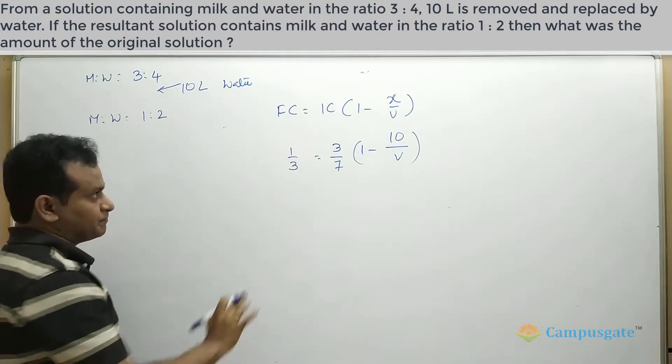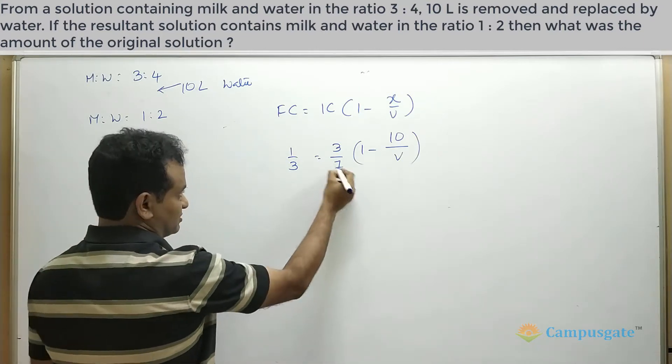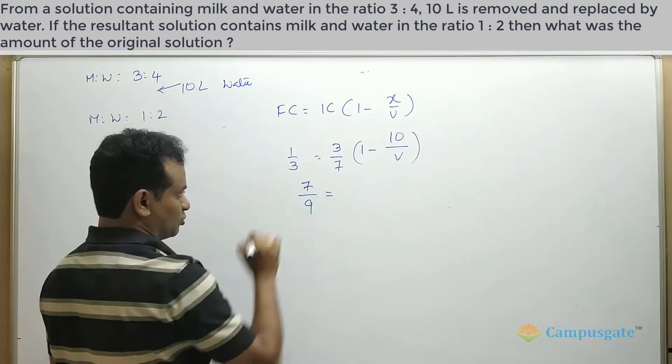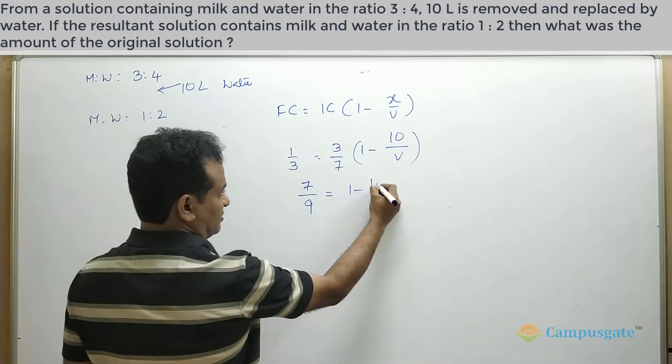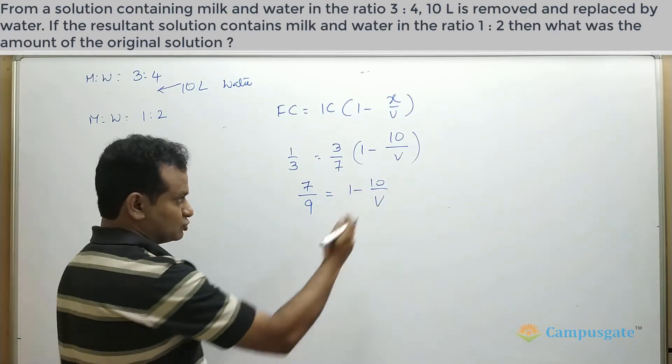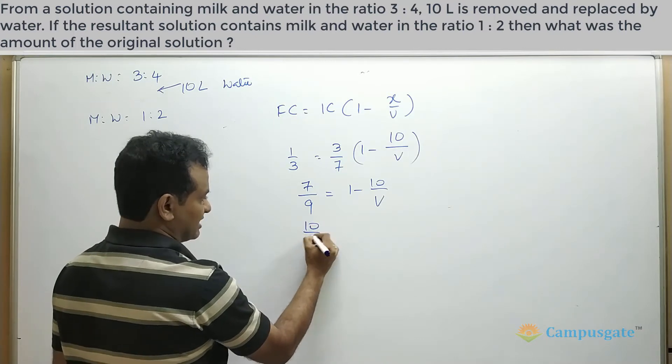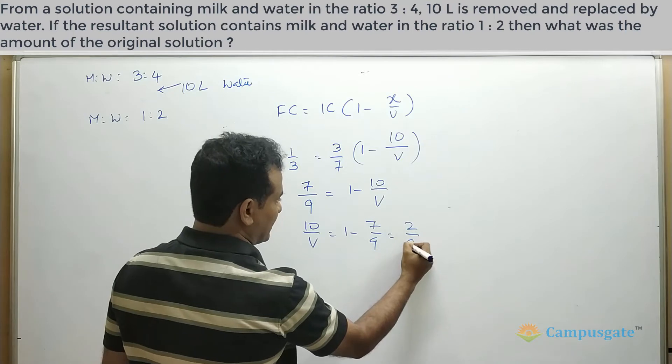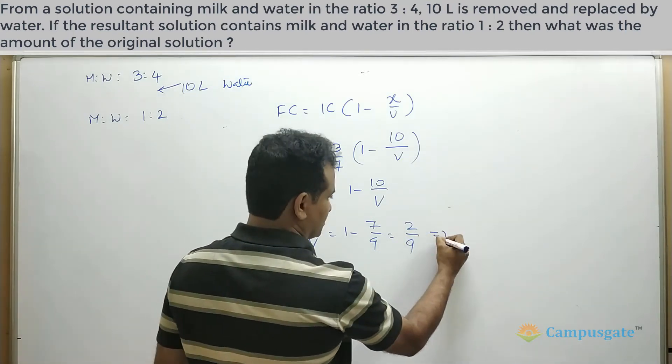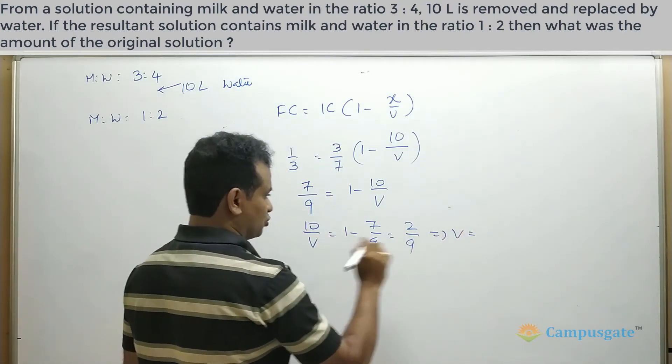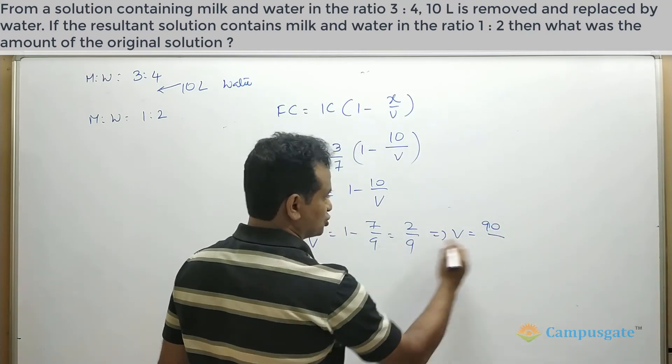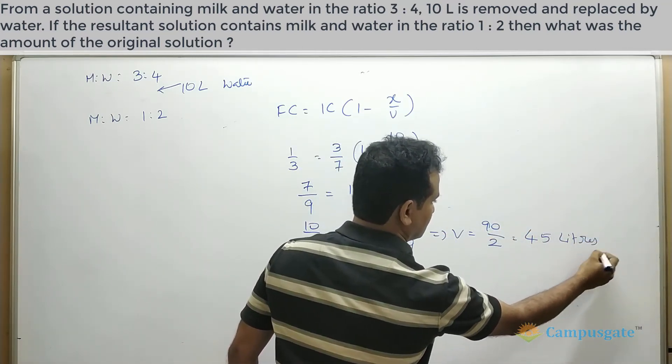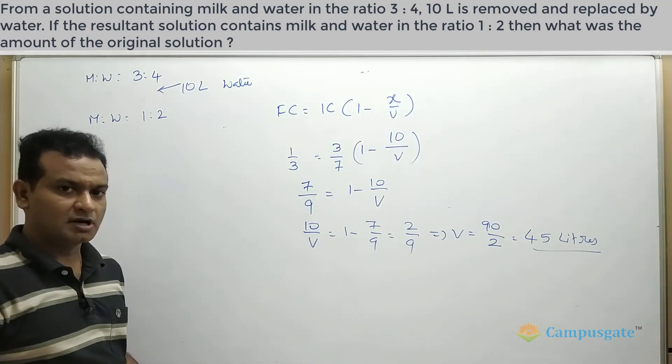Now let us simplify this equation. So 7 goes to the numerator, 3 comes down to the denominator, 1 minus 10 by v. Bring this 10 by v to this side, so 10 by v equals 1 minus 7 by 9 which is equal to 2 by 9. So v equals 9 goes to the numerator over 2, which is equal to 45 liters. This should be the answer.